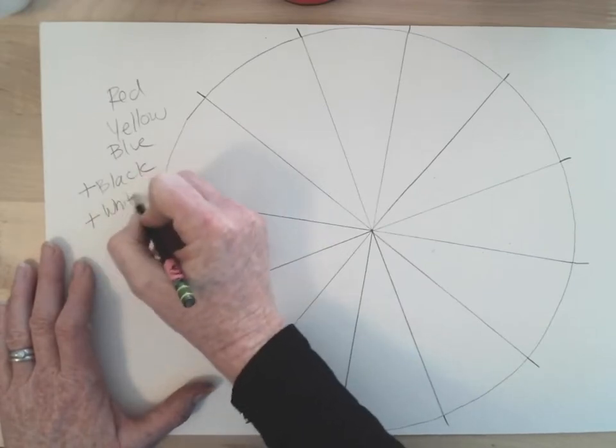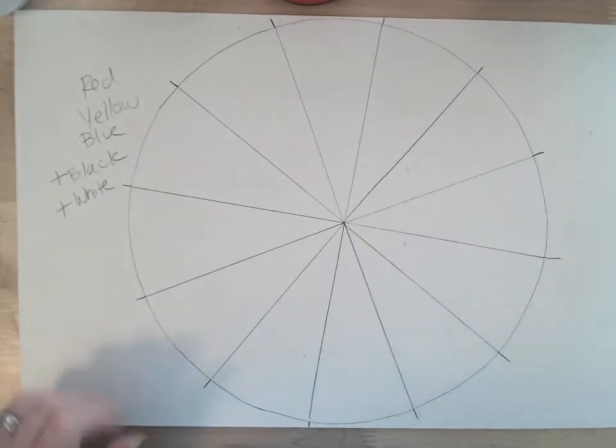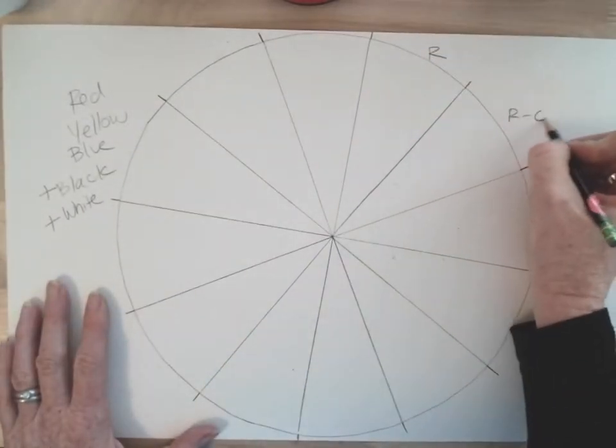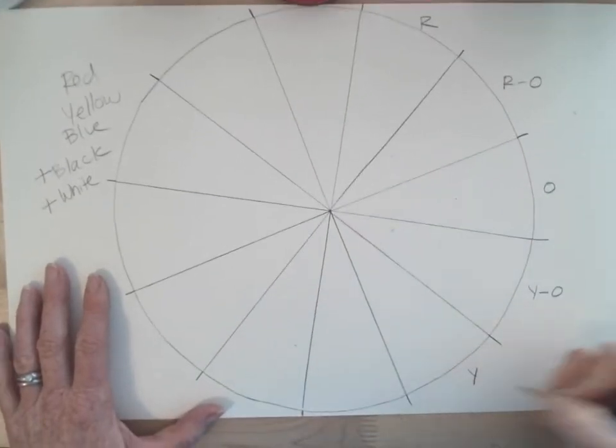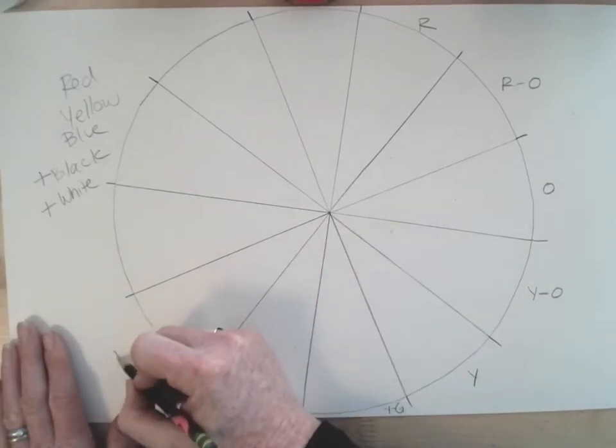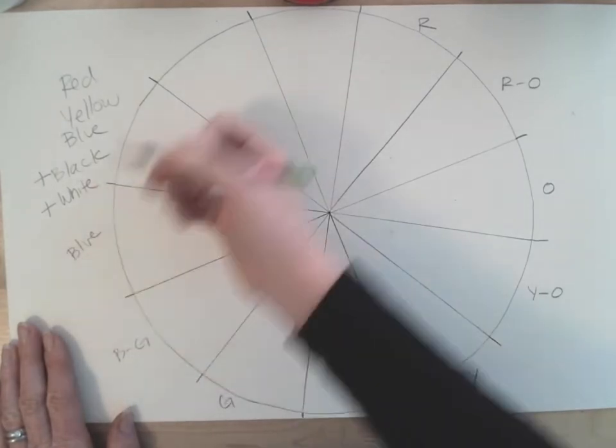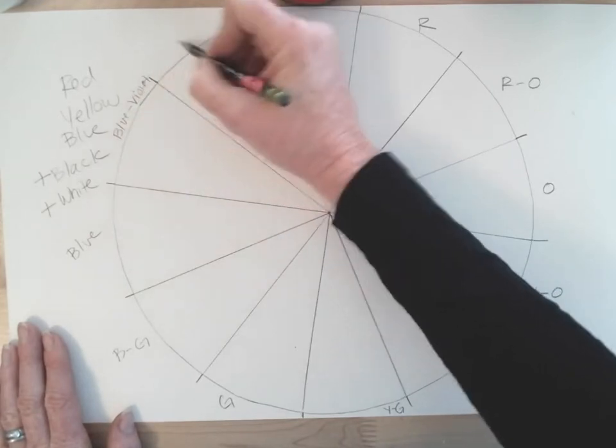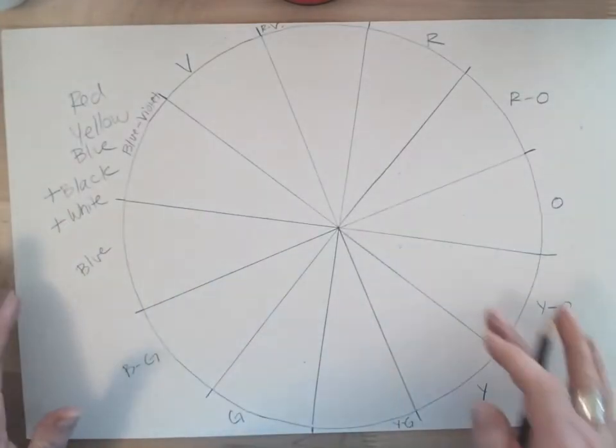Here's my pizza pie, my color wheel. I'm going to start by labeling out all my colors: red, red-orange, orange, yellow-orange, yellow, yellow-green, green, blue-green, blue, blue-violet, violet, and then red-violet. I recommend you do that first so you don't get confused and do your colors out of order.